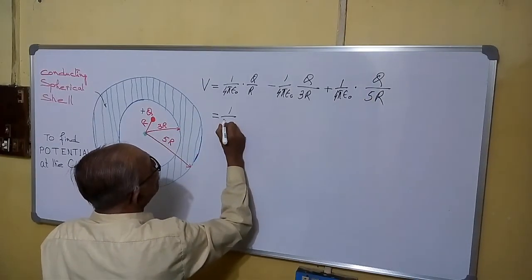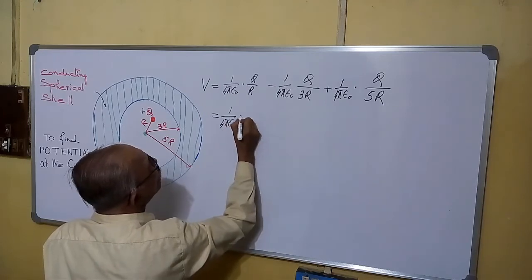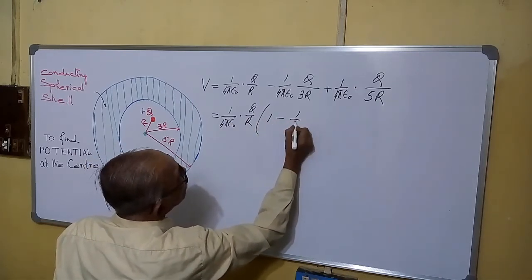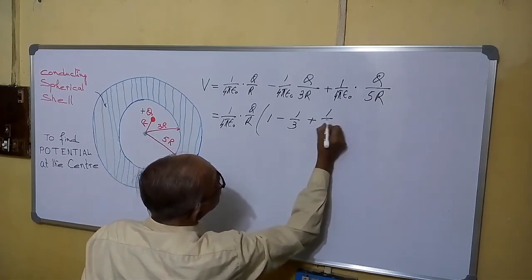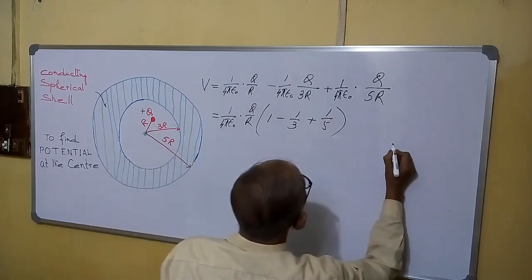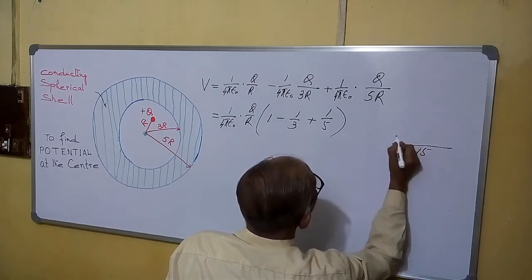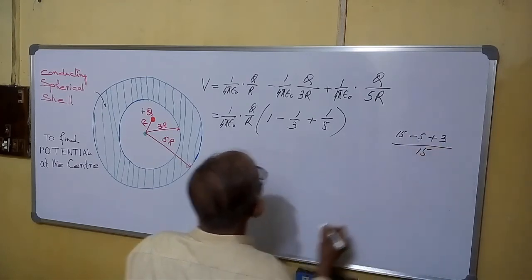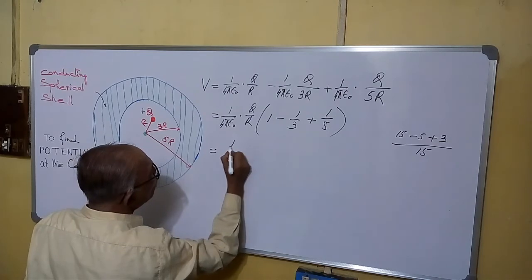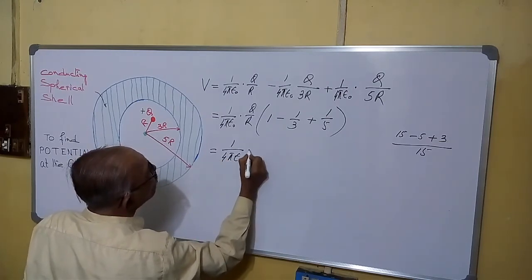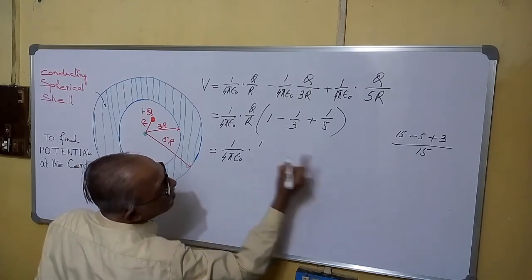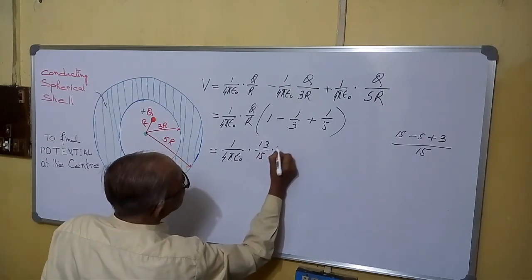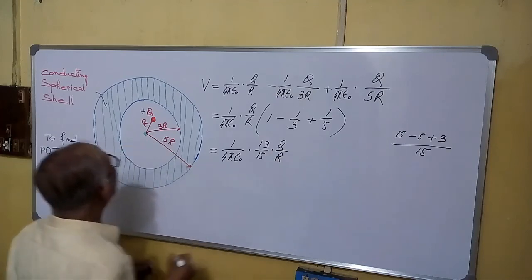So we can take 1 by 4 pi epsilon 0 into Q by R common. So 1 minus 1 by 3 plus 1 by 5. So 1 by 4 pi epsilon 0 into Q by R. This one will be 15, 15 minus 5 plus 3, 13 by 15. So equals to 1 by 4 pi epsilon 0 into 13 by 15 Q by R. This will be the potential.